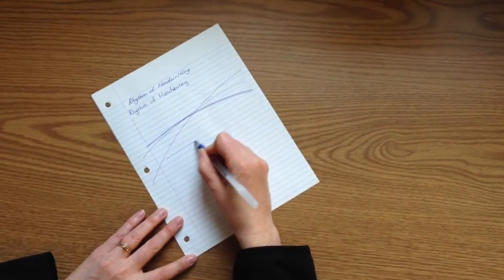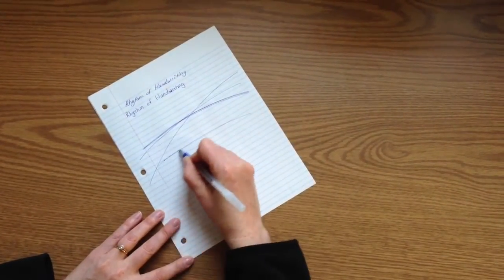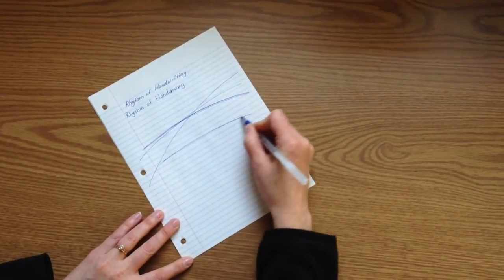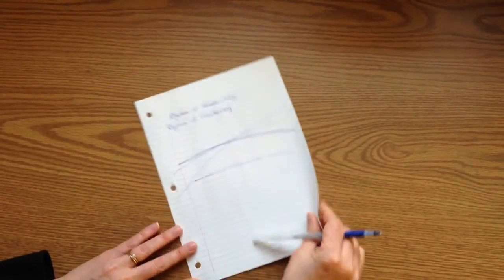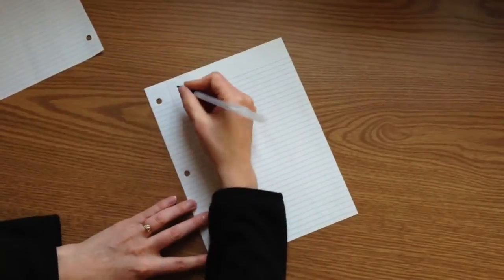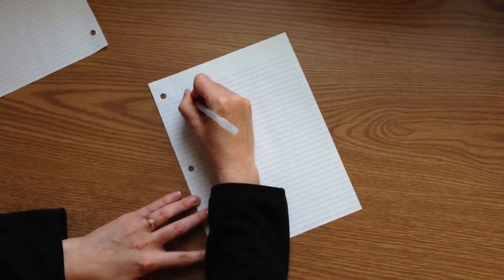But slanting the page creates an easy way to follow the writing that is going across the lines. Now when we apply this to handwriting, the result is that the writing is slanted.